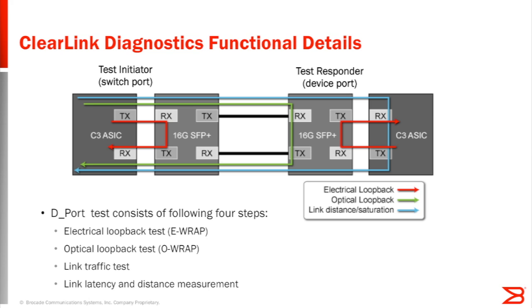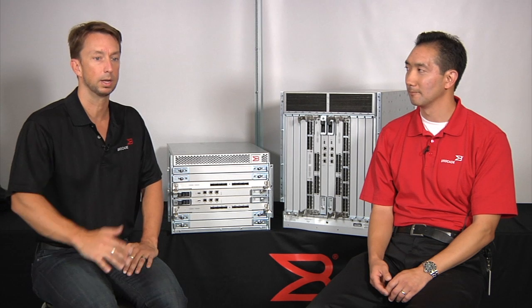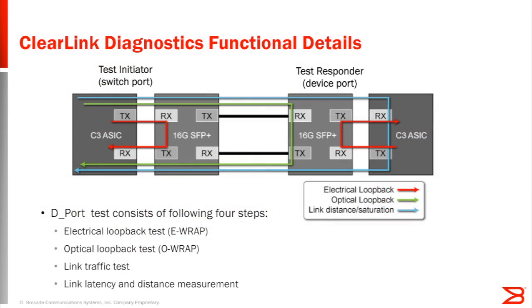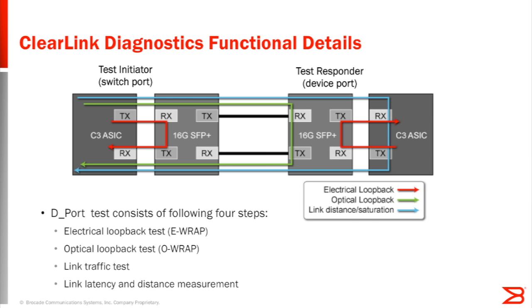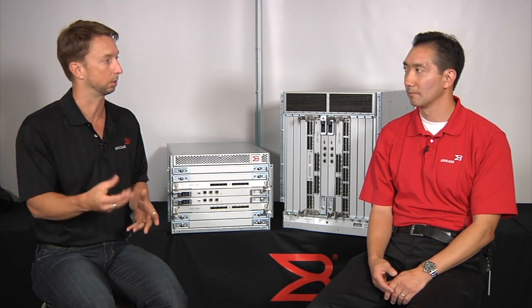Looking at the diagram, both the test initiator and test responder show Condor 3 Gen 5 ASICs — these are switch ports. D-port is also supported between a Brocade switch and an HBA port. We support the D-port test between pairs of switches, but the device port could also be an HBA port — specifically supported today with Brocade HBAs. There are some requirements: this is supported on Gen 5 platforms, the Condor 3 switches. The loopback test capability is supported only on 16-gig SFPs — that's new capability integrated into the 16-gig SFPs themselves, part of the optics capabilities.